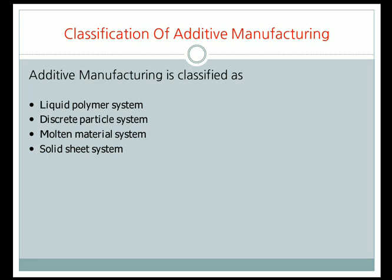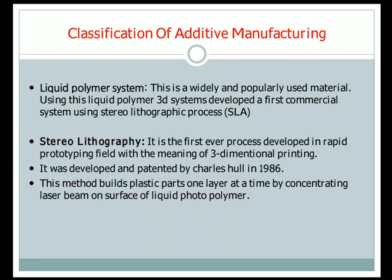The manufacturing of three-dimensional models is done by any one of these techniques. The first one is the liquid polymer system, which is the widely and popularly used material system. Using this liquid polymer system, 3D Systems developed the first commercial system using the stereolithographic process.